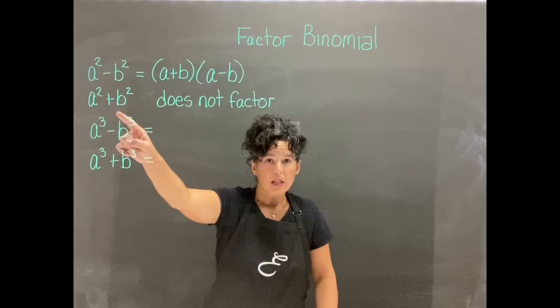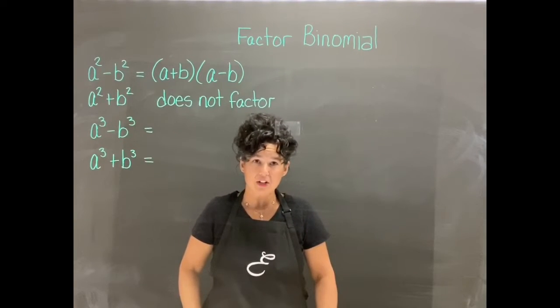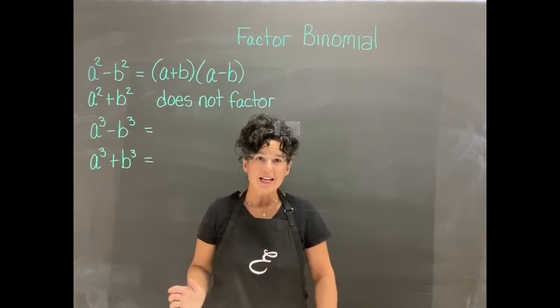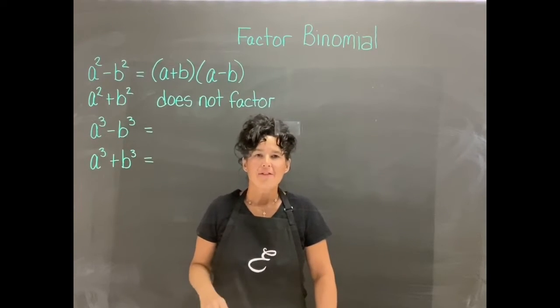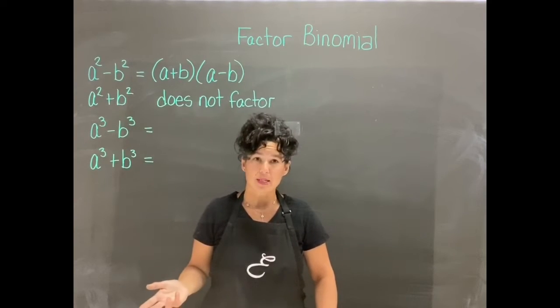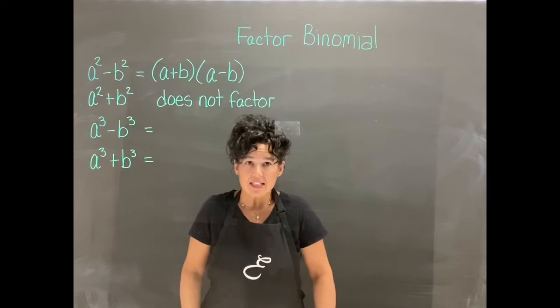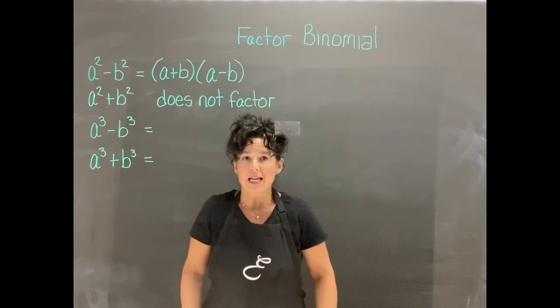When you have a plus between perfect squares, that does not factor. You would just be done. It would kind of be like if I said factor 15, you might turn that into 3 times 5. But if I said factor 17, that's like a tree stump. You're just done.